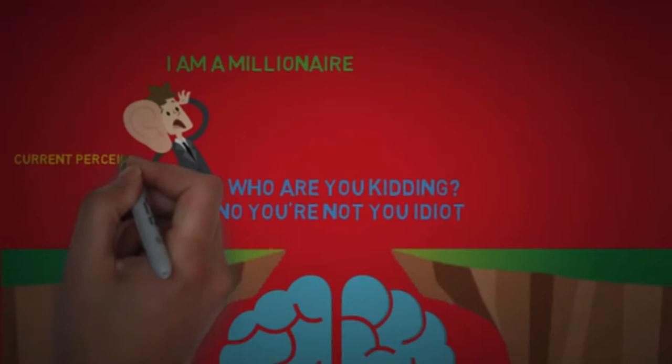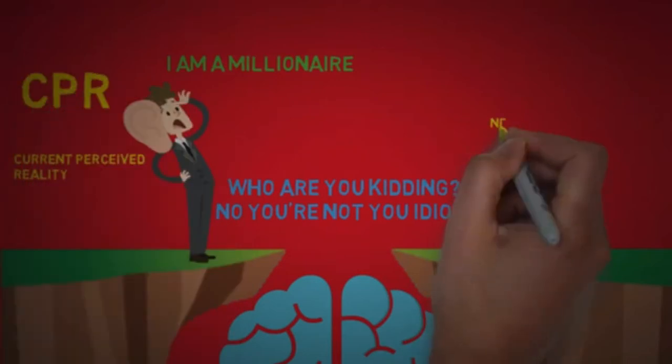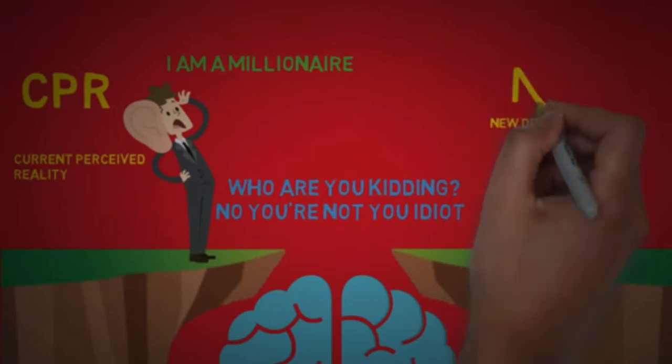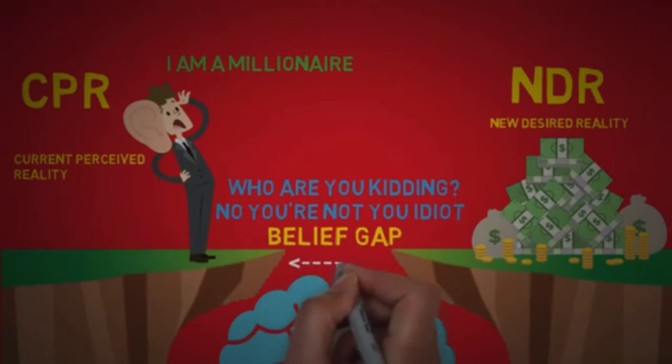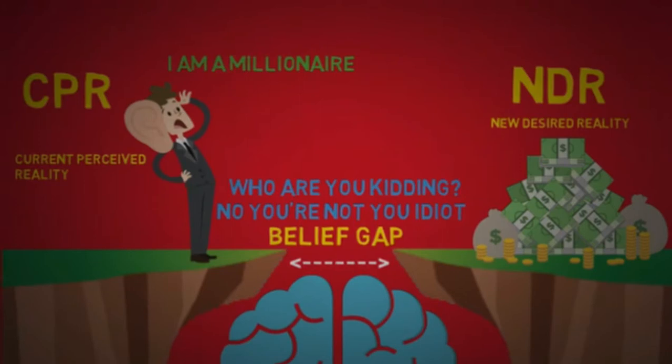According to Noah, how you currently perceive reality is your CPR, and what you want to change is your new desired reality, or NDR, and in this case, becoming a millionaire. The intensity of that voice represents your belief gap. That is the difference between your current and desired reality.